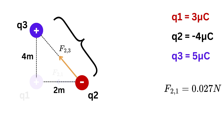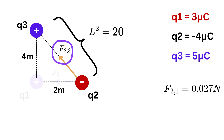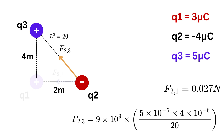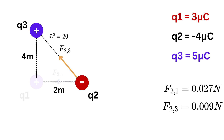Using the Pythagorean theorem, the distance squared is 2² + 4² = 20. Since q2 is negative and q3 is positive, they attract, so F(2,3) points from q2 toward q3 — diagonally upward and to the left. Using Coulomb's Law with r² = 20, we calculate the magnitude of F(2,3) as 0.009 newtons. Since this force is diagonal, we need to break it into x and y components.